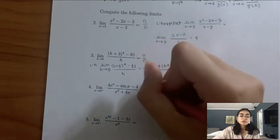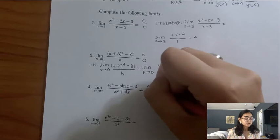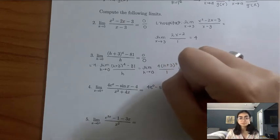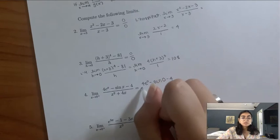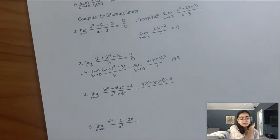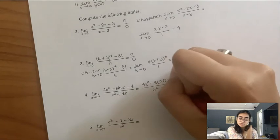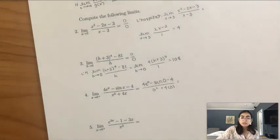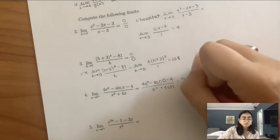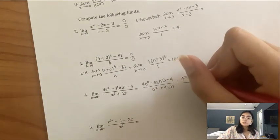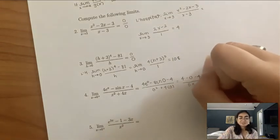For number 4, you cannot use limits as definition of the derivative — you have to do L'Hopital — which is why I always use L'Hopital, because it applies to everything. Plugging in 0: 4e to the 0 minus sine(0) minus 4, over 0 squared plus 4 times 0. Remember: anything to the 0 power equals 1, sine(0) equals 0, and cosine(0) equals 1. So 4(1) minus 0 minus 4 equals 0 on top, and 0 on the bottom — indeterminate, so we use L'Hopital's rule.